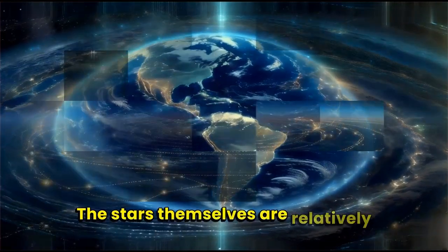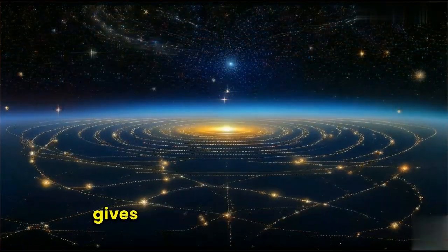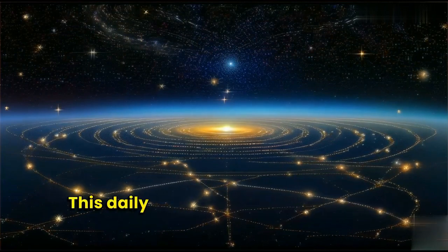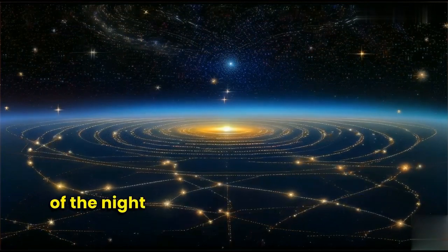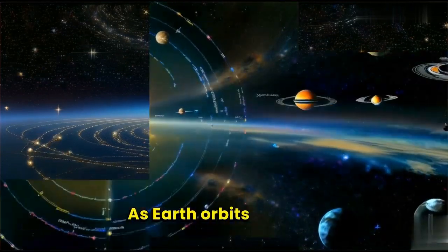The stars themselves are relatively fixed in their positions, but the rotation of Earth gives the illusion of movement. This daily rotation is what causes the familiar patterns of the night sky to change throughout the night and over the course of the year as Earth orbits the sun.